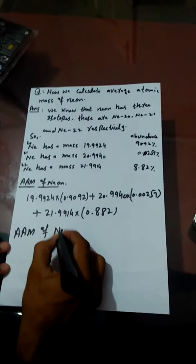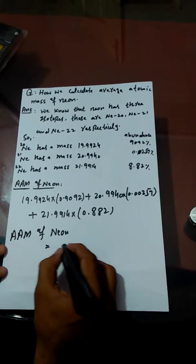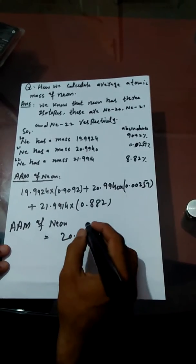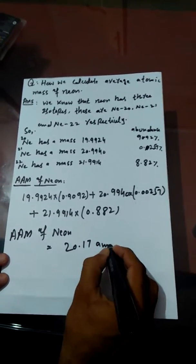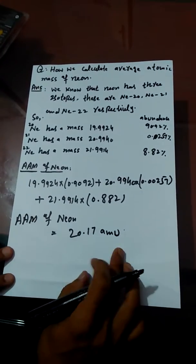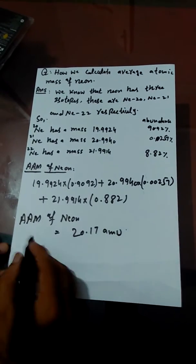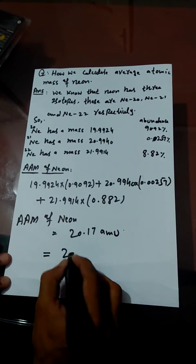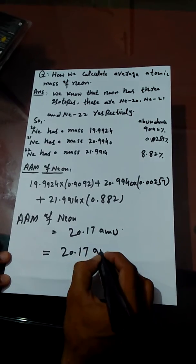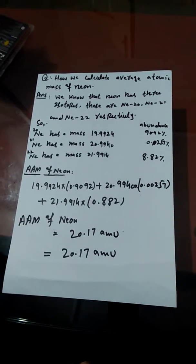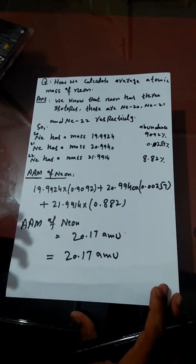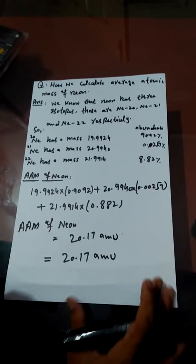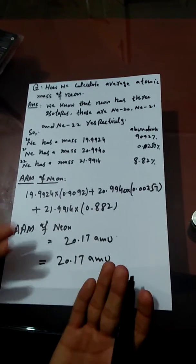This gives us an average atomic mass of Neon equal to 20.17 AMU. AMU is the unit of average atomic mass. This value is nearly equal to the average atomic mass of Neon listed in the periodic table.